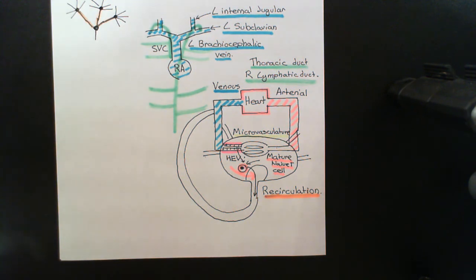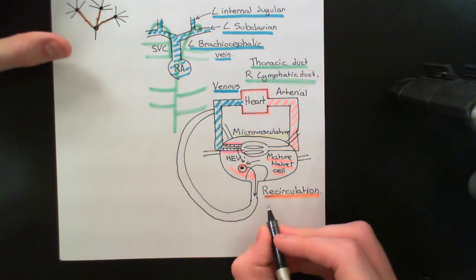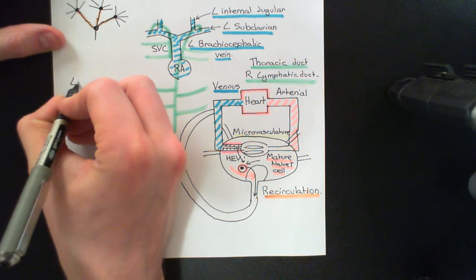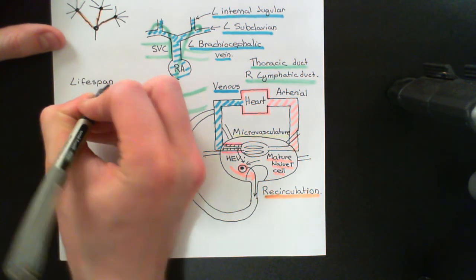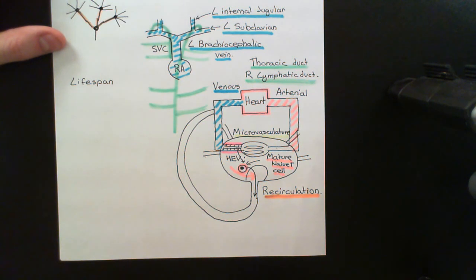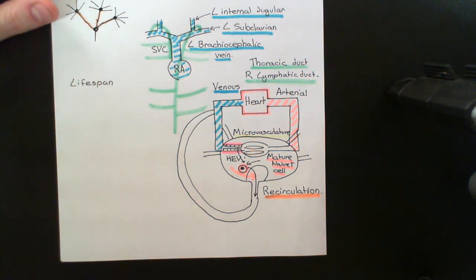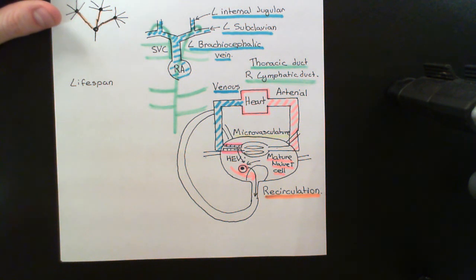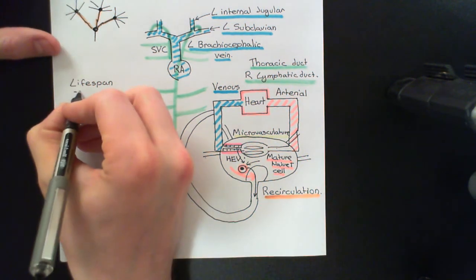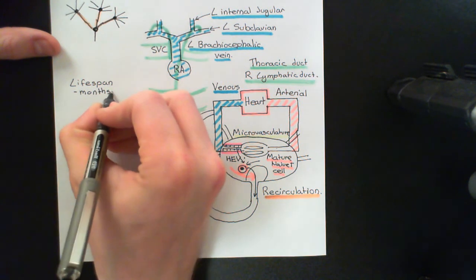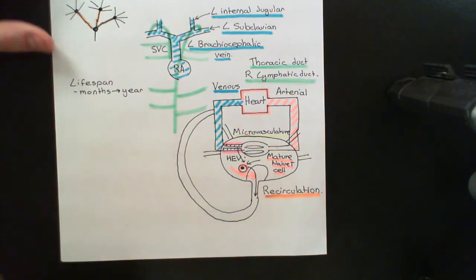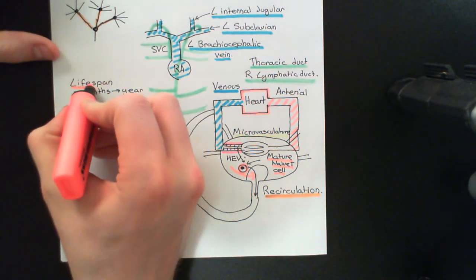Just a few more points before we have a break. What is the lifespan of a T lymphocyte? They don't live in this form for the lifetime of the human. Memory T lymphocytes, which we'll come on to later, have a much longer lifespan and can actually live for the lifespan of the human. However, these mature naive T cells which have never been activated — which haven't seen their antigen fragment yet — will not live for your entire lifetime. Instead, they have a lifespan of between months and maybe up to a year or beyond, and then they'll be removed from the bloodstream.